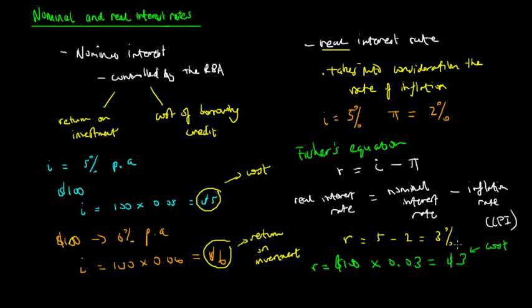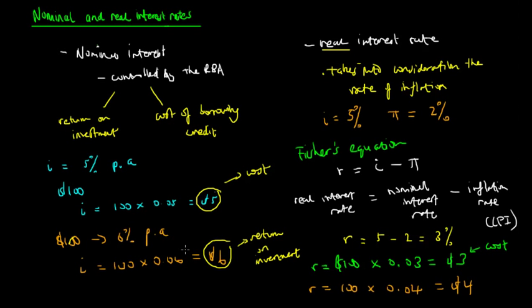Because money in the future is worth less than money now due to this 2% rate of inflation. And if we look at the return on investment, the real rate of return would be $100 multiplied by 0.04 — that is 6% minus 2% — and we get $4. So instead of having a nominal return of $6, we have a real return of $4. Even though we have $106 in the bank account, it could only buy $104 worth of goods and services in the future.